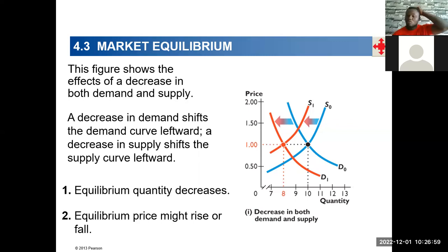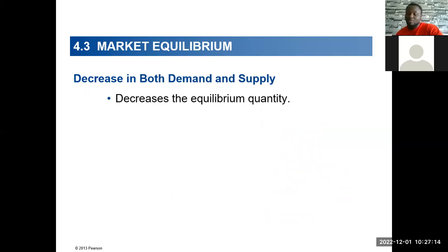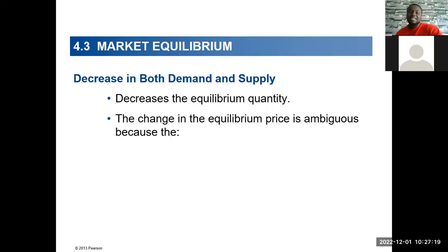Whenever demand and supply move together in the same direction, the change in price is ambiguous, but the quantity will move in the same direction as the movement of demand and supply. So if both decrease, equilibrium quantity will definitely decrease.